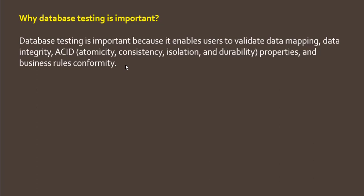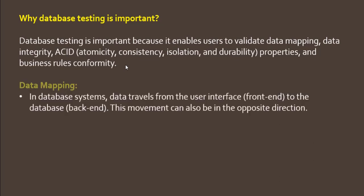First, let's understand data mapping. In a database system, data travels from the user interface to the database, and this movement can also be in the opposite direction — for example, when logging in you are fetching data from the database. This is a major interaction between the front-end user interface and the back-end database.